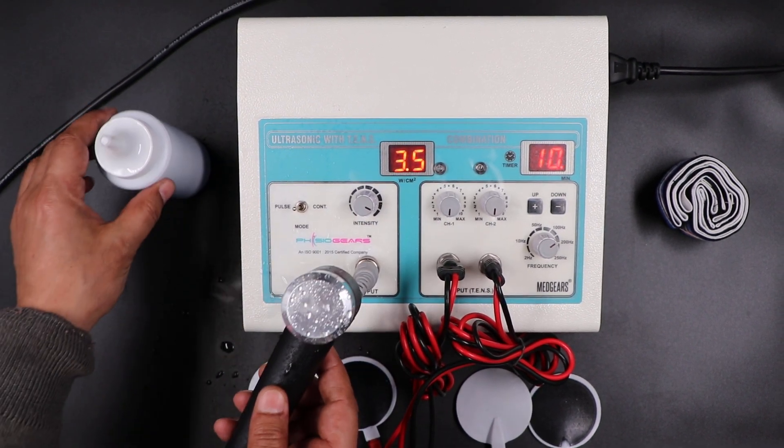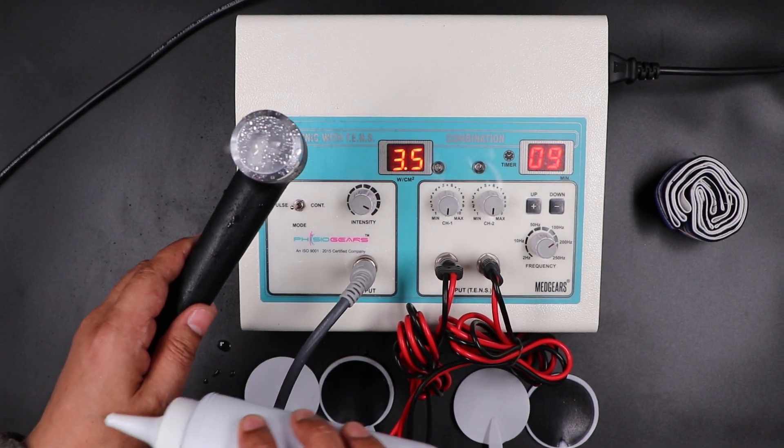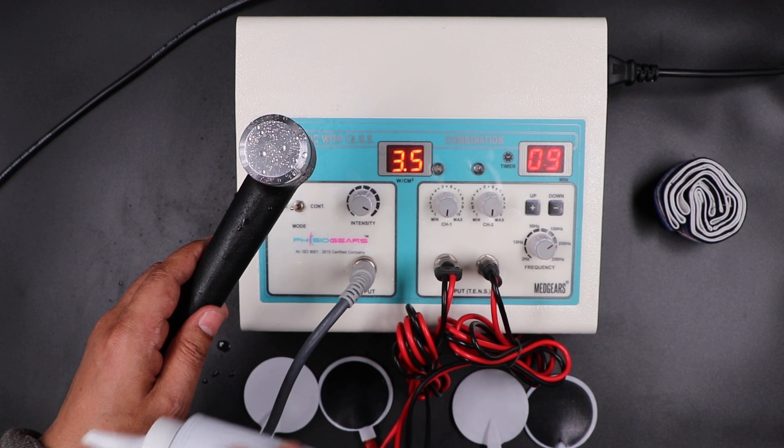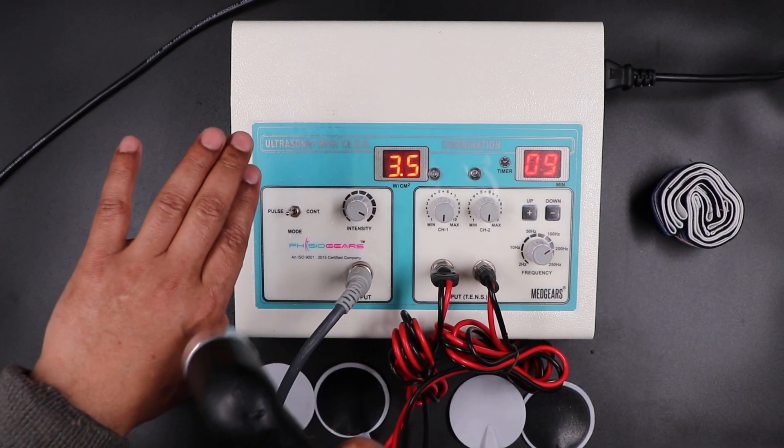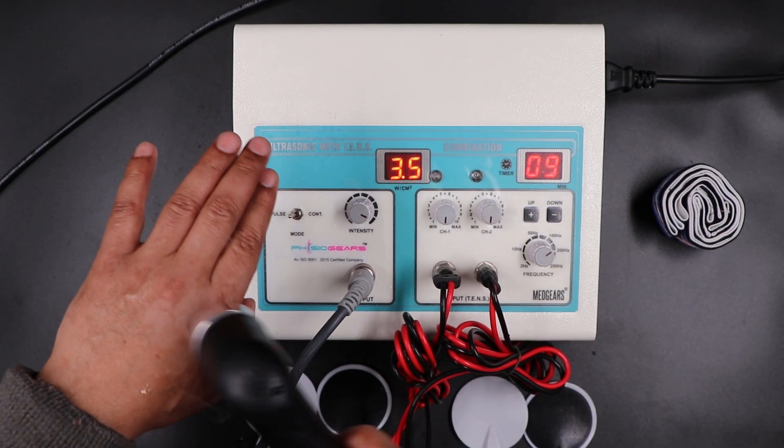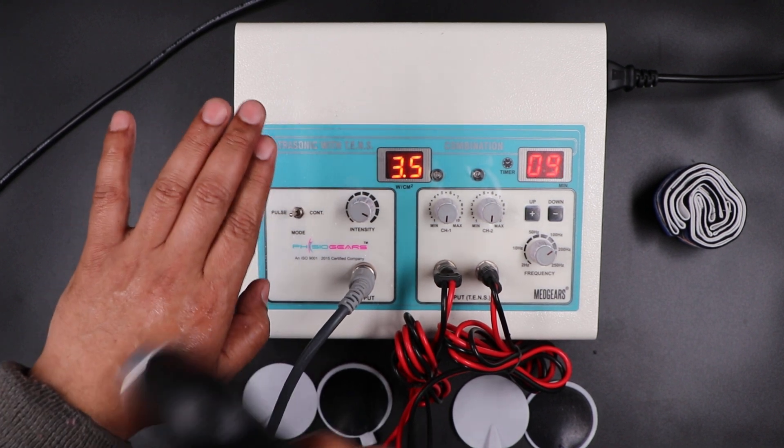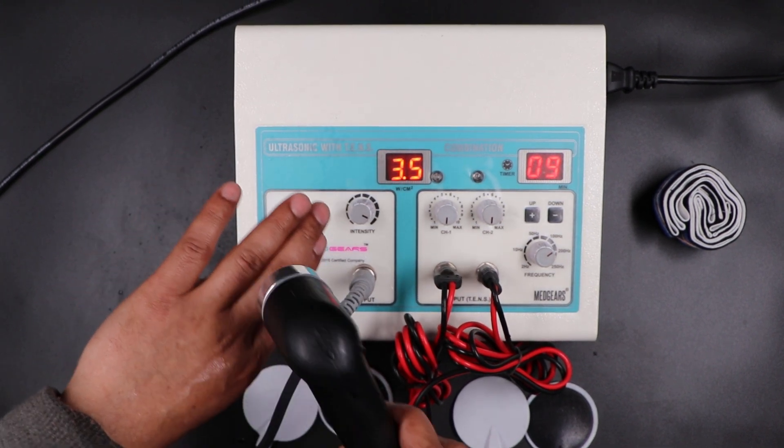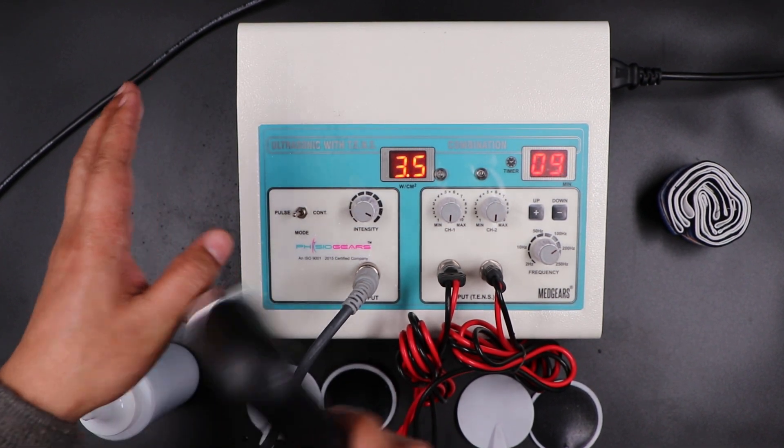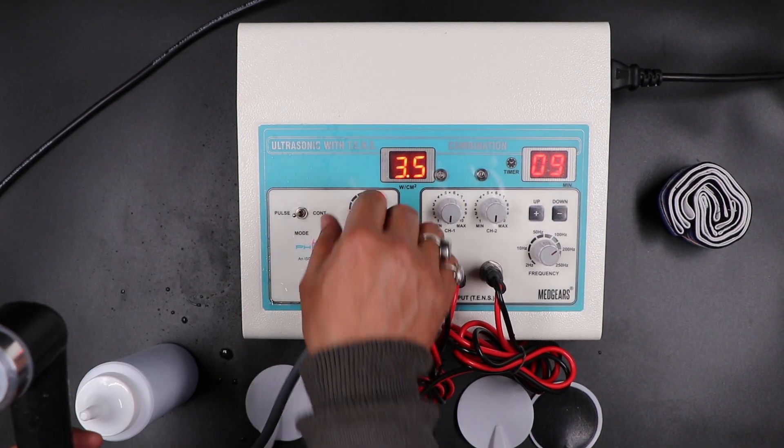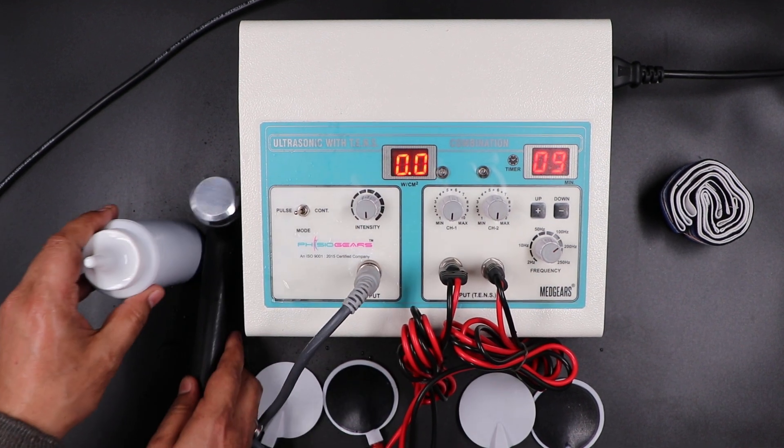When you take the therapy, put some amount of this gel on your skin and take the therapy. Rotate this one like this, clockwise and counterclockwise. When the gel is dry, the session of your therapy is complete. You can close it to zero zero. This is for ultrasonic.